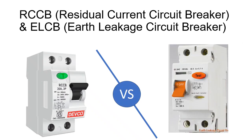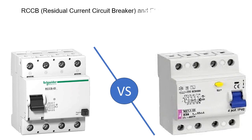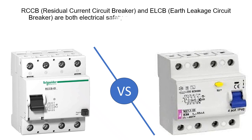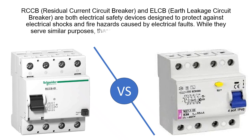RCCB and ELCB are both electrical safety devices designed to protect against electrical shocks and fire hazards caused by electrical faults. While they serve similar purposes, there are some differences between the two.